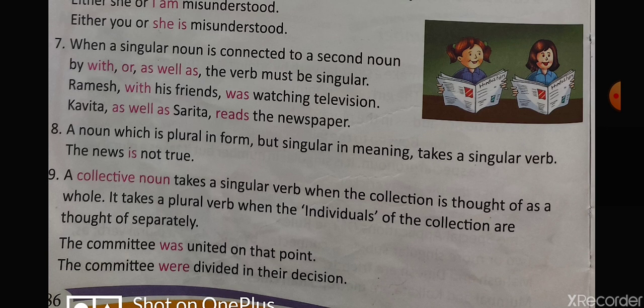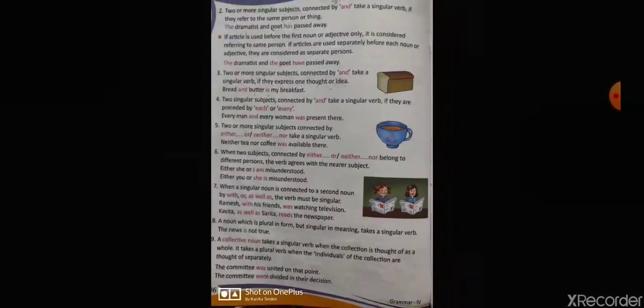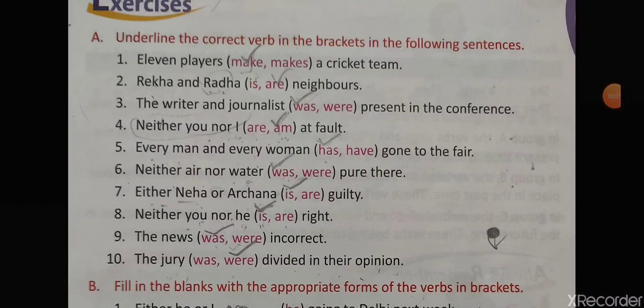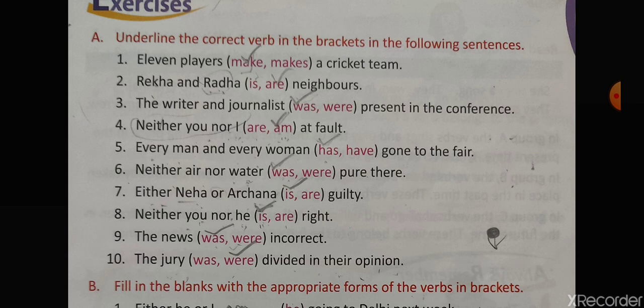With this, the explanation of the chapter is over. Let us come on to the exercise on page number 87. Underline the correct verb in the brackets. The sentences are: 11 players make a cricket team. Rekha and Radha are neighbours. The writer and journalist were present at the conference. Neither you nor I am at fault. Every man and every woman has gone to the fair. Neither air nor water was pure there. Either Neha or Arjuna is guilty. Neither you nor he is right. The news was incorrect. The jury were divided in their opinion.